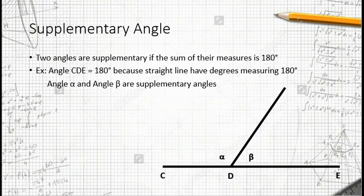In this case, D is a point on straight line C, E. Angle C, D, E is 180 degrees because straight lines have degree measuring 180 degrees.